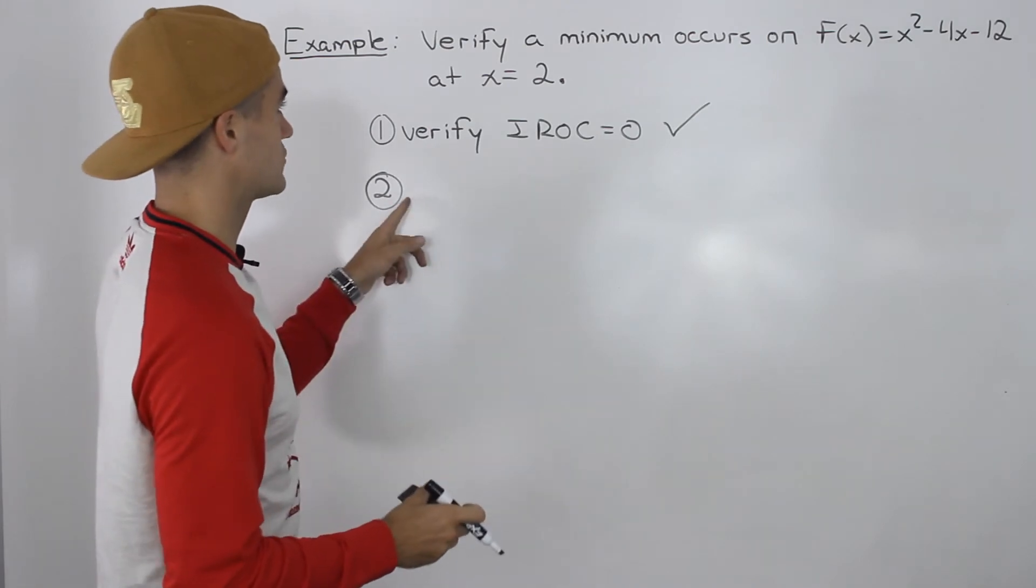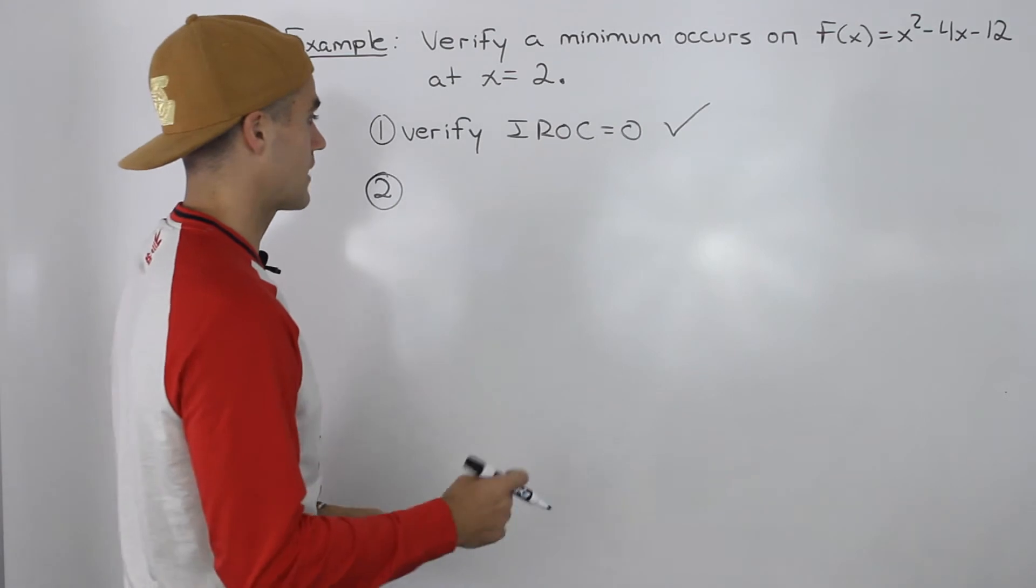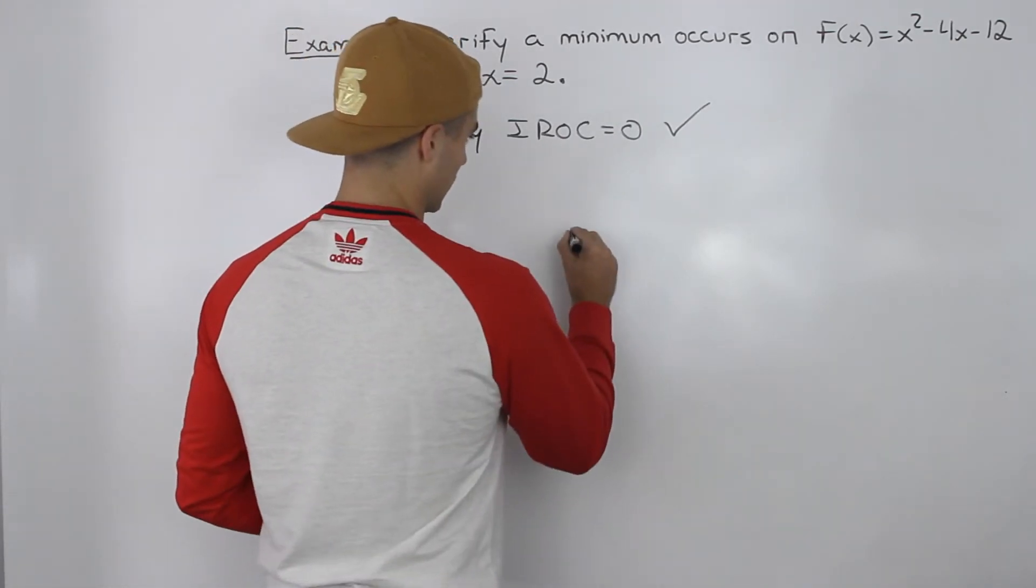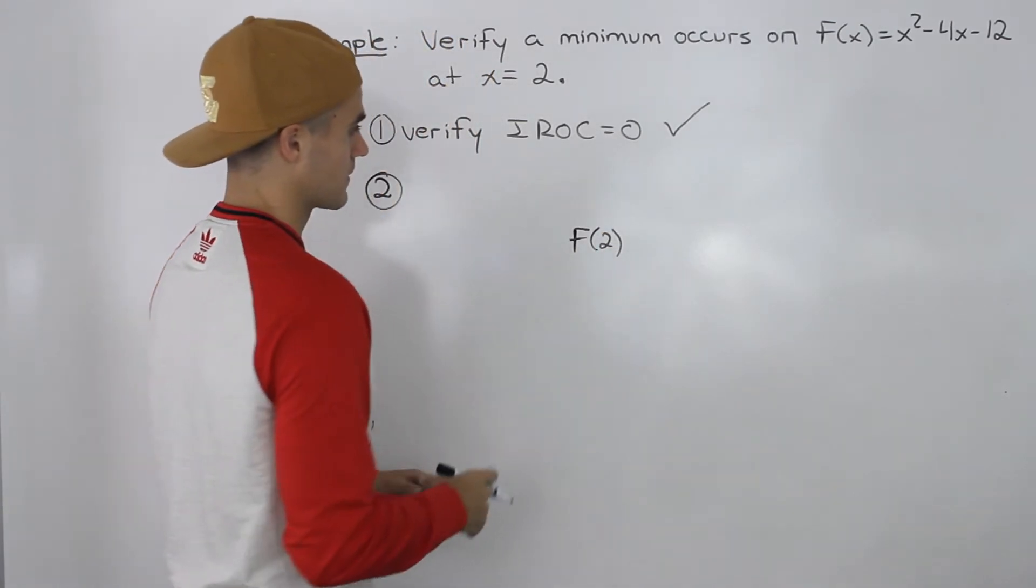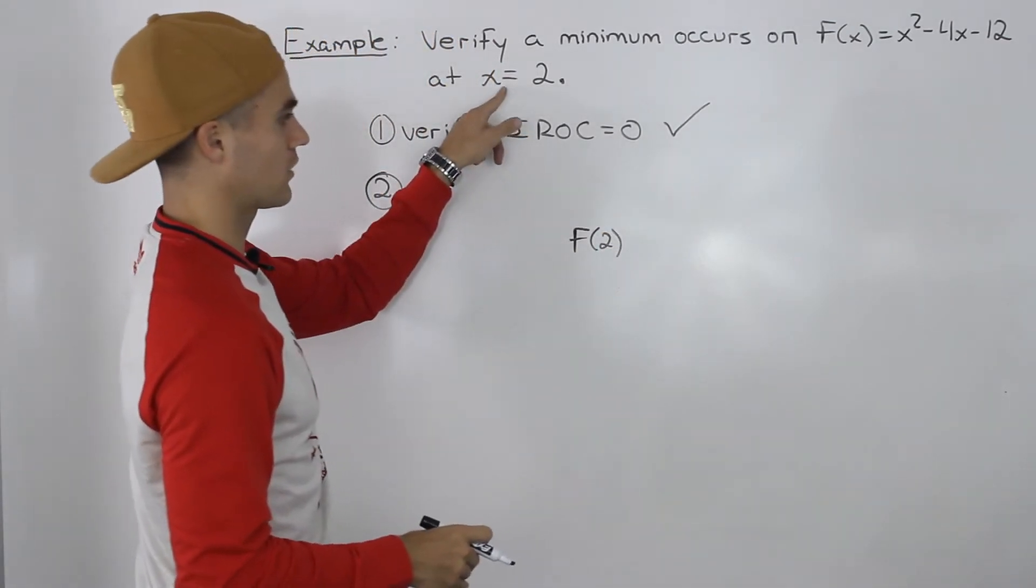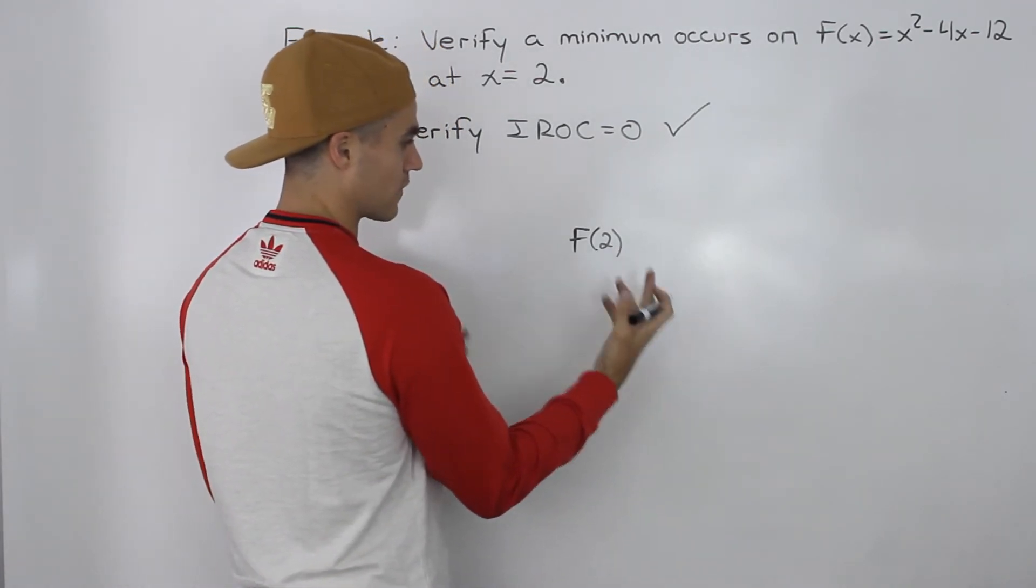Now for step two, we have to verify that it's an actual minimum. How do we do that? What we have to do is look at the y values at the point we are working with and with points that are very close to it.